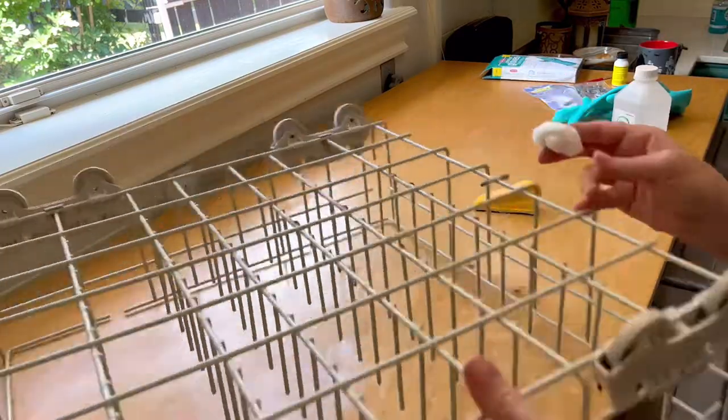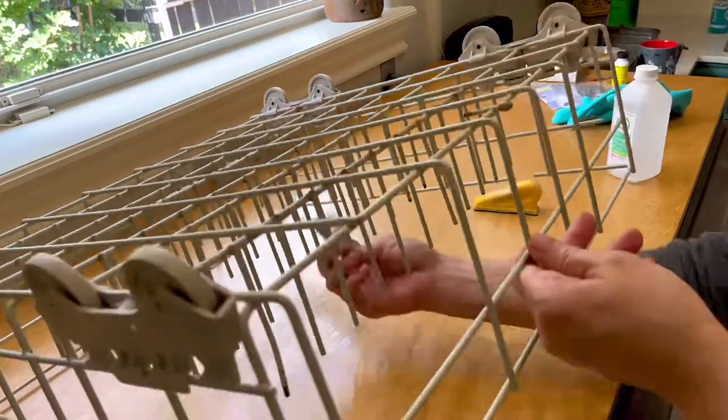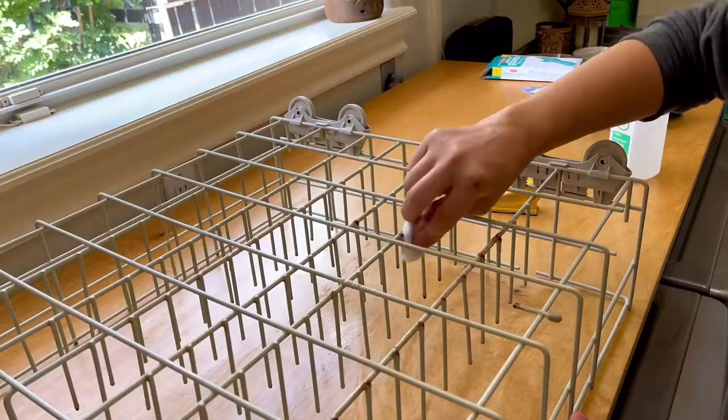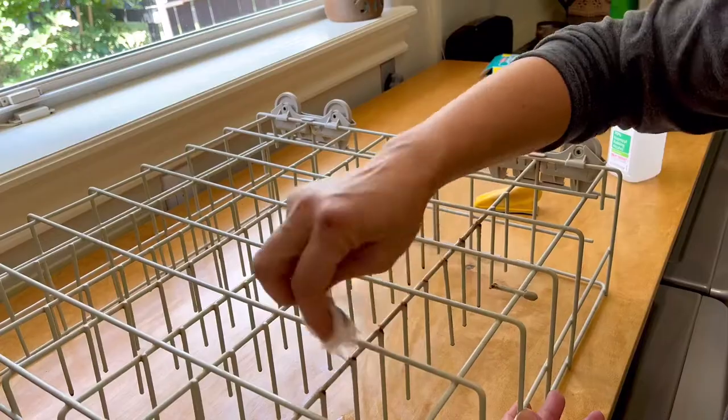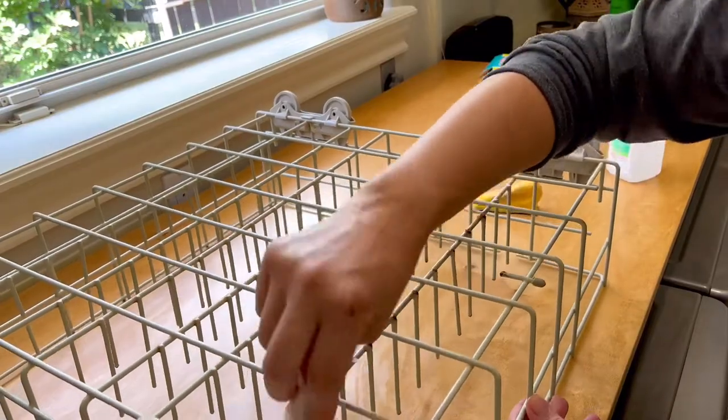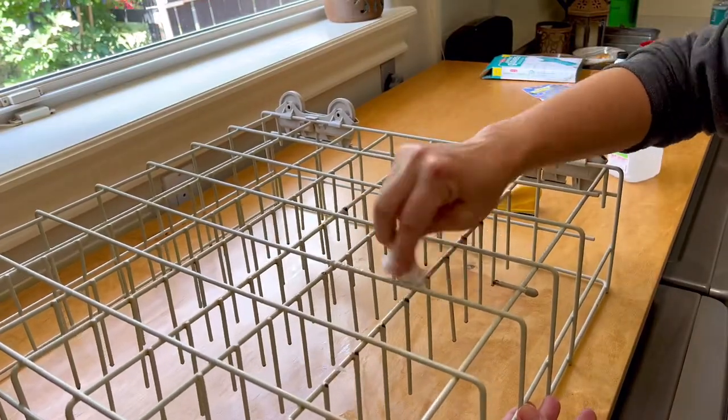I actually recommend using a paper towel or a rag instead with that alcohol. That cotton ball was leaving little bits of cotton ball behind. So all you need to do here is just make sure that you're cleaning away all of that rust dust with the alcohol and then let that air dry before we move on to the next step.